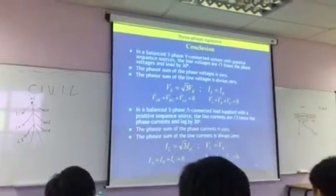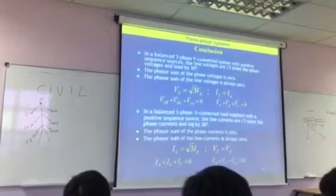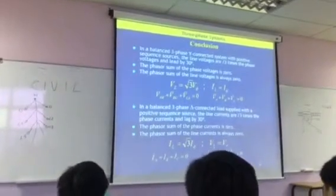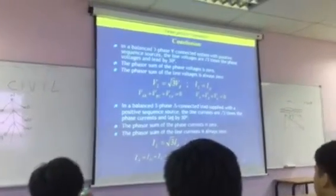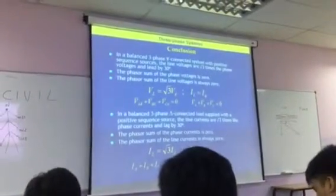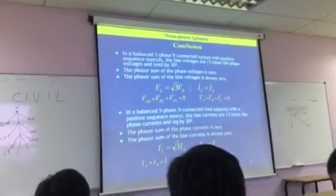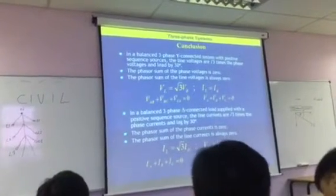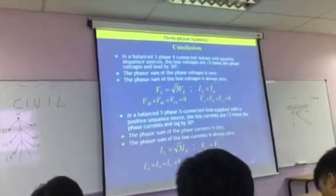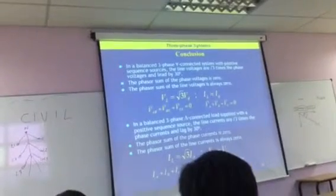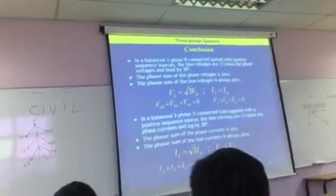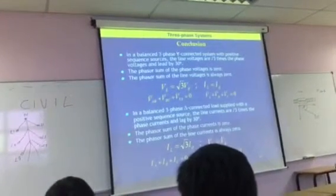So just to complete, the difference between the star system and the delta system. What we get from the star system is we get a higher voltage and a lower current, essentially. For the delta system, we get a higher current and a lower voltage. So that's something to consider.